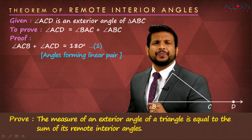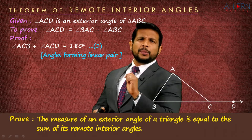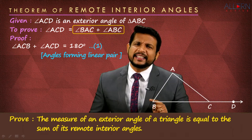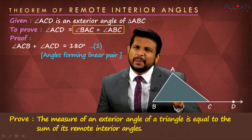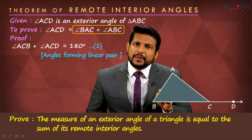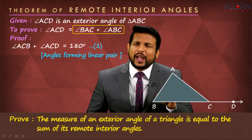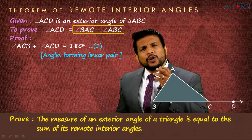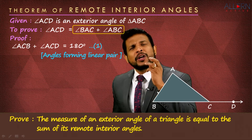Now we need to think about the other two angles on the right-hand side — angle BAC plus angle ABC. We are talking about those two interior angles of this triangle. What do we know about the sum of interior angles of a triangle? There's only one thing — the angle sum property of a triangle.